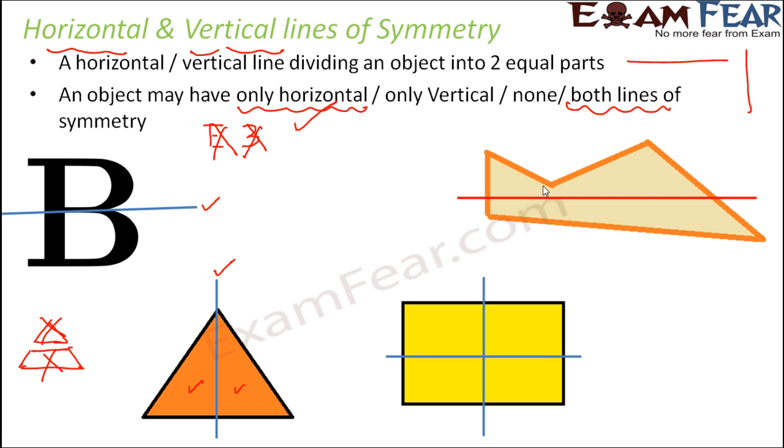At the same time, it doesn't have any horizontal line also, which can divide it into two equal halves. So this is basically an example of the none category. That is, it doesn't have either a horizontal line of symmetry or a vertical line of symmetry.